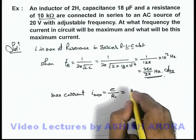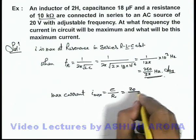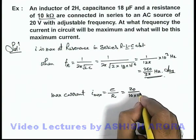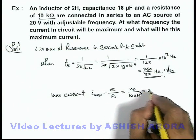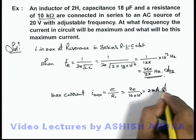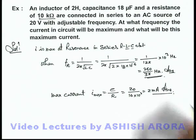So this can be written as 20 divided by 10 × 10³. This will be 2 milliampere. That will be the answer to this problem, which is the maximum current in the circuit.